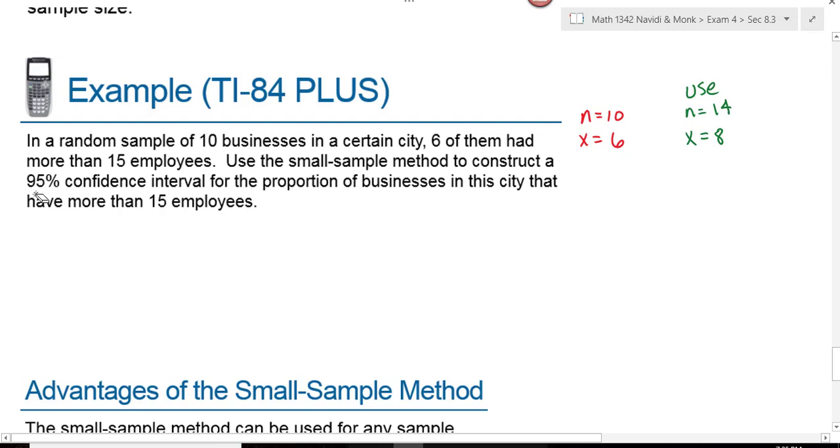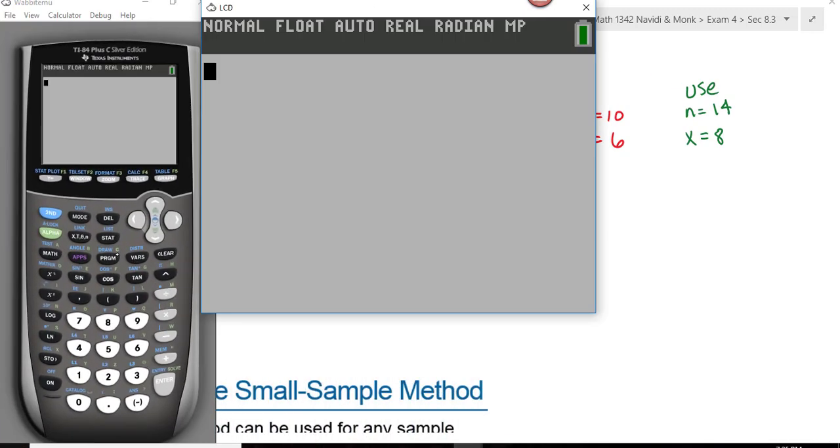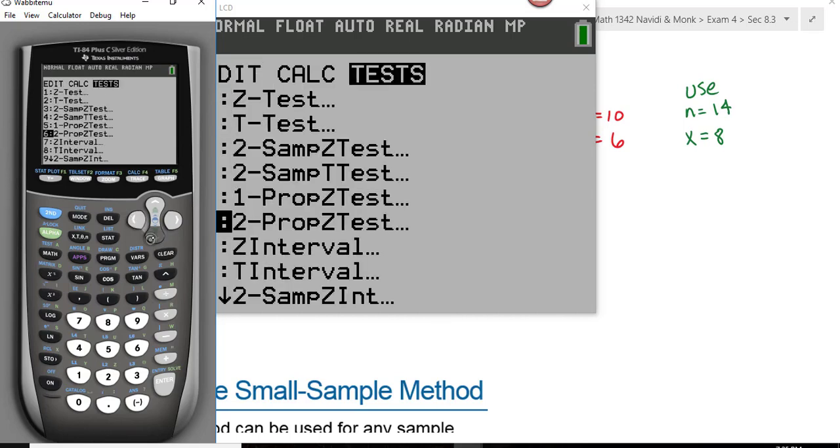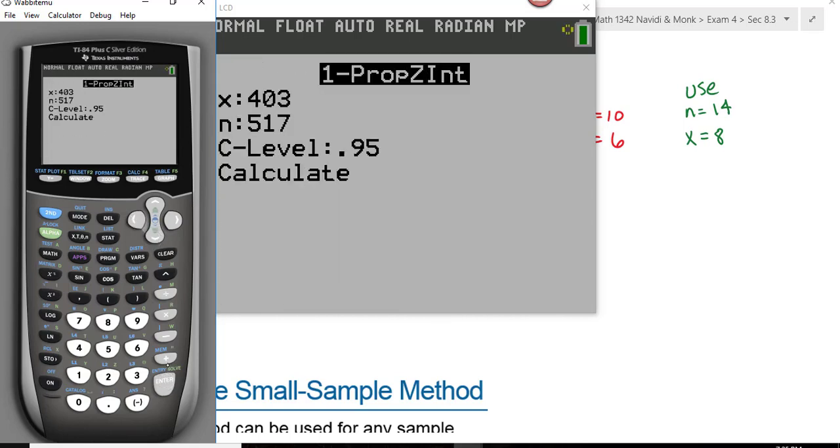Here we're asked to construct a 95% confidence interval for the proportion of businesses in this city that have more than 15 employees. We go to our calculator, the one prop Z interval. We hit stat, test, go down to letter A, one prop Z interval.